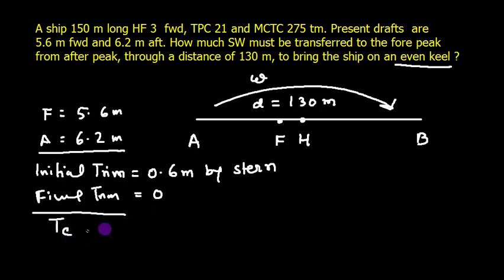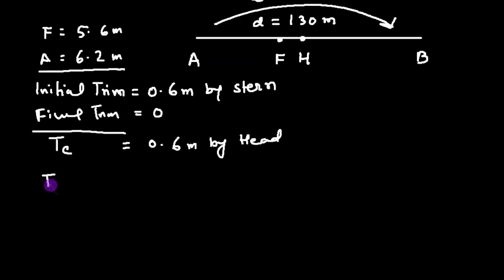Well, the trim cost will be 0.6 meters by head. Why by head? Because it was 0.6 meters by stern. Now something has been transferred from aft to forward and the trim has become zero, so obviously the trimming is towards ahead. Well, in centimeters, TC in centimeters is going to be 60 centimeters.